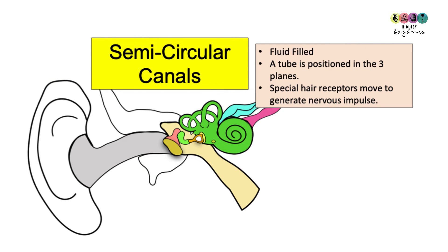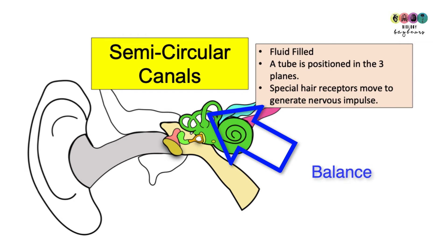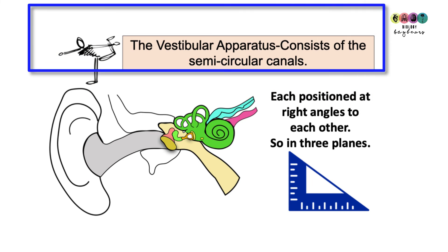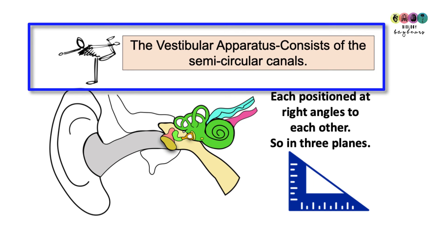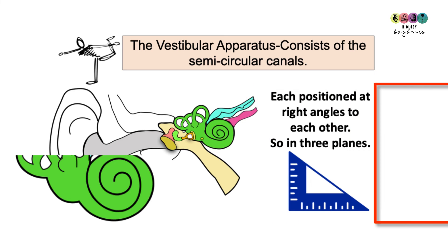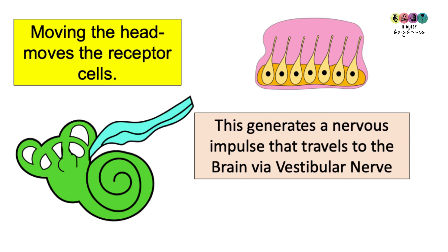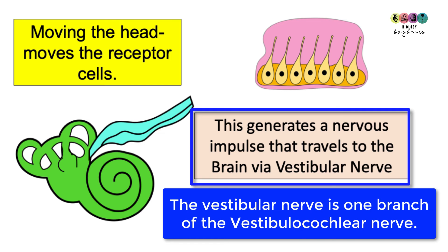As well as being the organ of hearing, the ear is the organ of balance. Balance in the ear is all to do with the semicircular canals — fluid-filled tubes, each positioned in one of three planes at right angles to each other. The part of the ear concerned with balance is the vestibular apparatus. When you move your head, the fluid in the semicircular canals moves, causing hair-like receptor cells to move and generate a nervous impulse sent to the brain via the vestibular nerve.